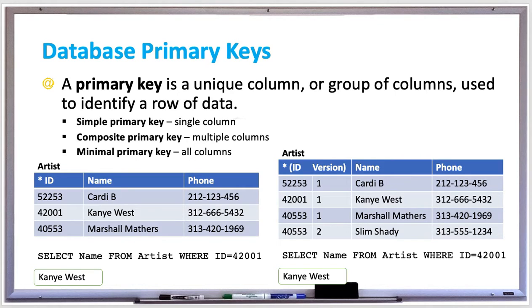In the table on the right, we're using a composite primary key. So the key is made up of both the ID and the version columns combined. The table is very similar except for the addition of the version column. You can see that for the Marshall Mathers row, there's a second version called Slim Shady, so he has a version two. Although the IDs are the same, the addition of the version column makes the combination of those two rows unique.